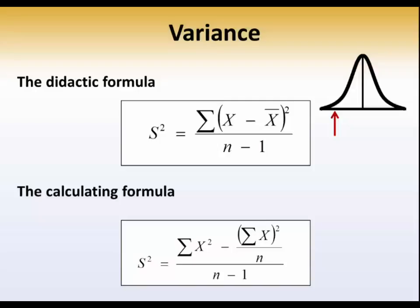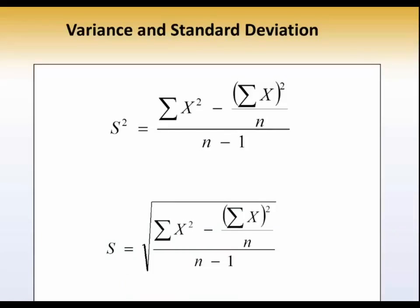Once you've calculated the variance, you can then also calculate the standard deviation. Notice the formula on the top is the calculating formula for the variance. If you take the square root of the variance, as we've done on the bottom, you have the standard deviation. Both variance and standard deviation represent how much variability there is in a data set. We'll use the variance and standard deviation many, many times throughout your text.